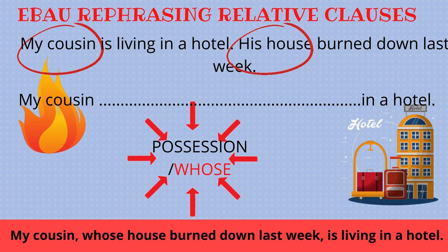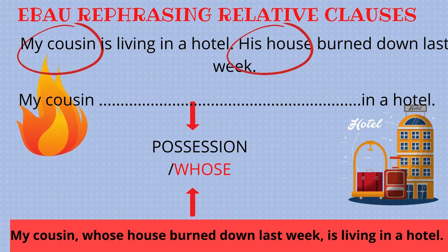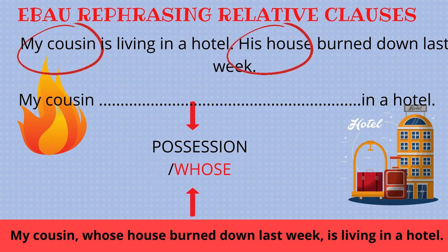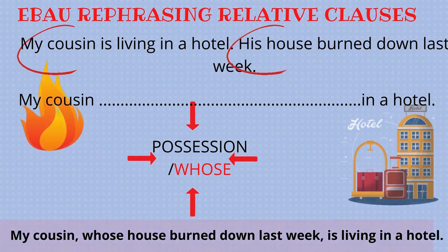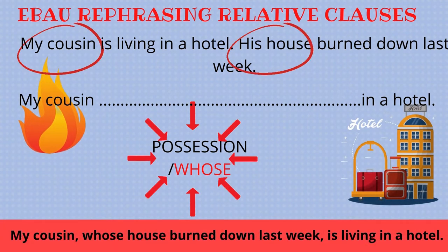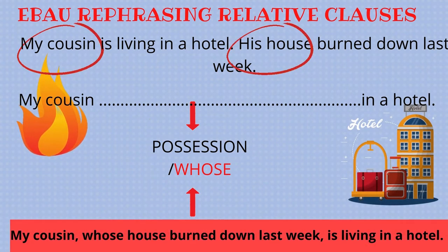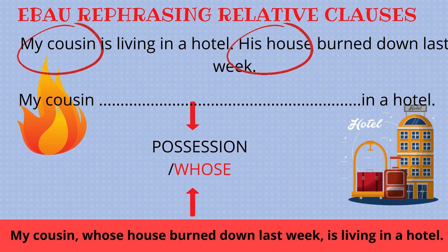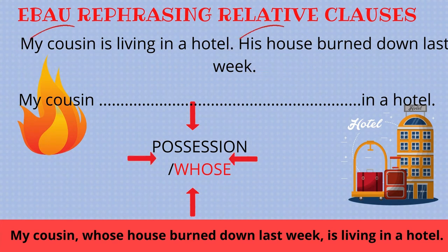Before going to the blackboard, let's look at two more specific examples of relative clauses. The first is the use of the relative pronoun 'whose', which indicates possession in English and can be translated into Spanish as 'cuyo' or 'cuya'. If we had to join these two sentences — 'My cousin is living in a hotel' and 'His house burned down last week' — they tell us that my cousin is living in a hotel because his house burned down last week.